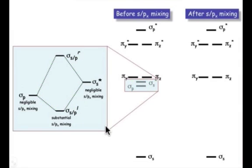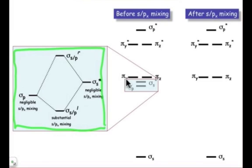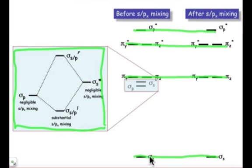So what's the result of s p mixing? Most things don't change in this diagram. All the pi levels stay exactly the same. They weren't involved in s p mixing. This sigma p star wasn't really very close to the other sigma p and sigma s star, so it wasn't involved in mixing. Similarly, that energy doesn't change for the sigma s. It's very far away and it doesn't get involved in s p mixing. It's only these two that change their position, sigma p and sigma s star.